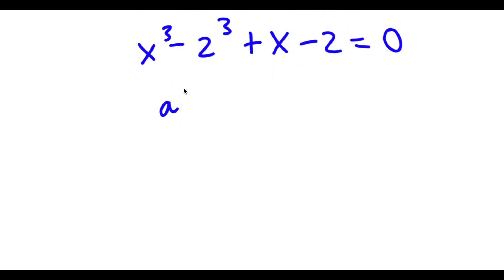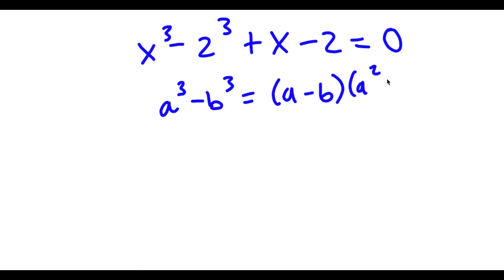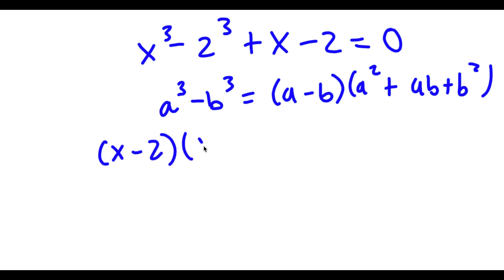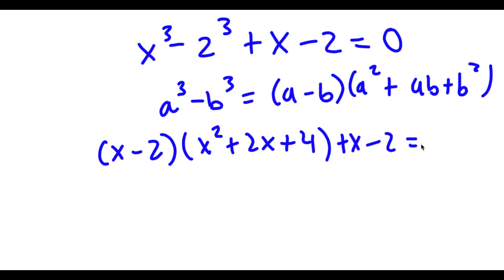If I have something in the form a cubed minus b cubed, this equals a minus b times a squared plus ab plus b squared. So x cubed minus 2 cubed can be rewritten as x minus 2 times x squared plus 2x plus 4. So I have x minus 2 times x squared plus 2x plus 4, plus x minus 2, equals 0.